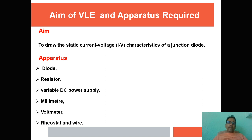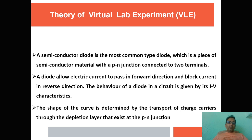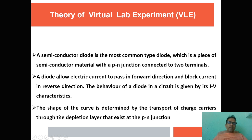The p-n junction diode is a semiconductor diode — a very common type made of semiconductor material with a p-n junction connected to two terminals. A diode allows electric current to pass in the forward direction (forward biasing) and blocks current in the reverse direction (reverse biasing). The IV characteristic curve is determined by the transport of charge carriers through the depletion layer that exists in the p-n junction.